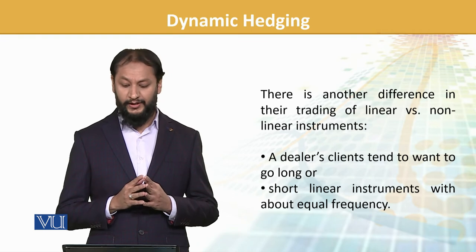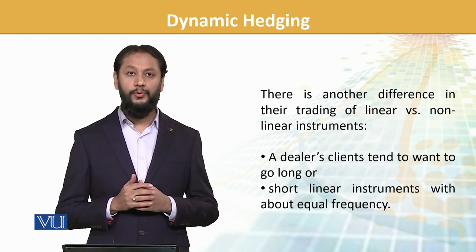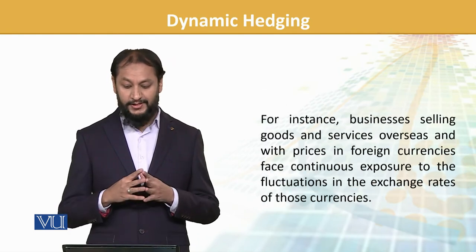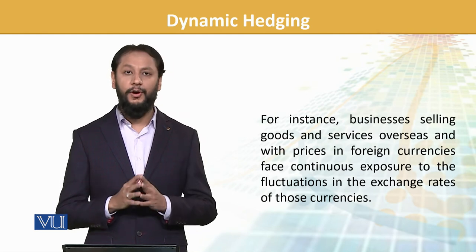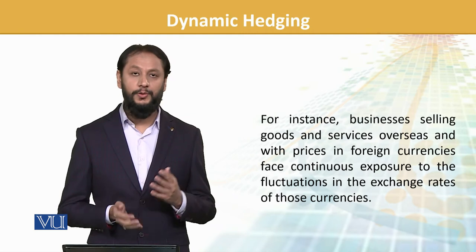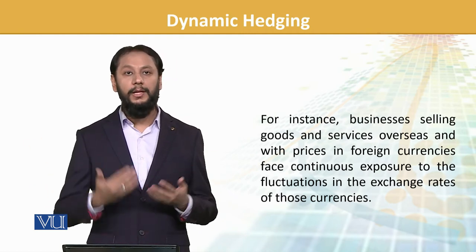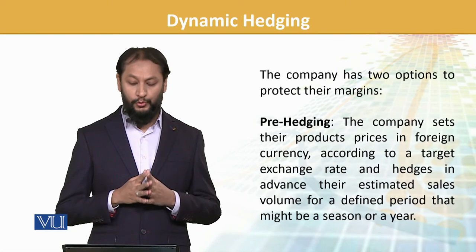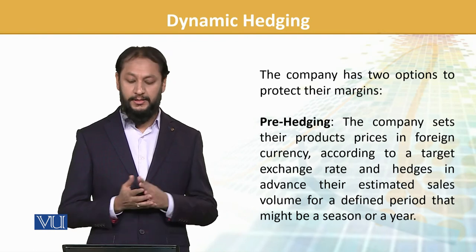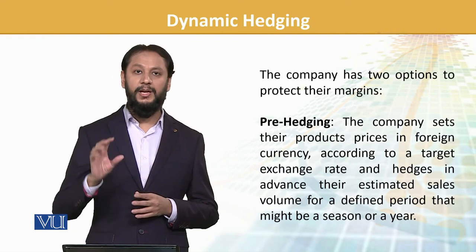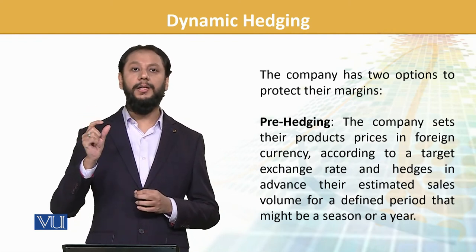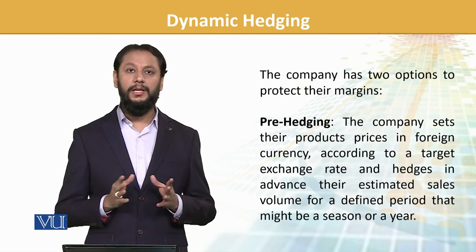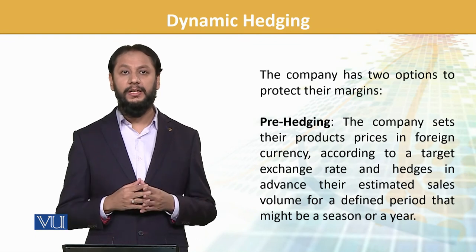There is another difference between trading of linear versus non-linear: a dealer's clients tend to want to go long or short on linear instruments with equal frequency. For instance, businesses selling goods and services overseas with prices in foreign currencies face continuous exposure to fluctuation. Daily base par currency change ho rahi hai aur transactions aur shipments bhi daily ho rahi hain — meaning heavy FX exposure year-round. The company has two options to protect their margins. One is pre-hedging: the company sets their product price in foreign currency according to a target exchange rate and hedges for the whole season, but this carries significant under-hedging and over-hedging risk.